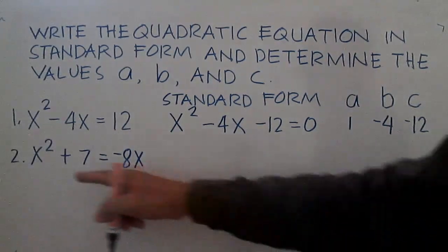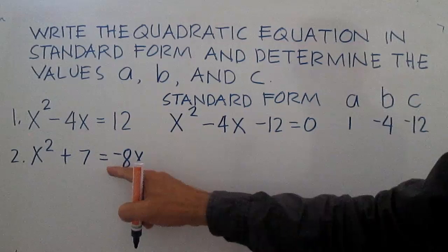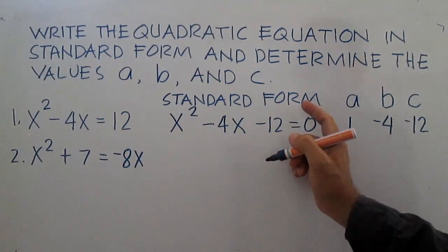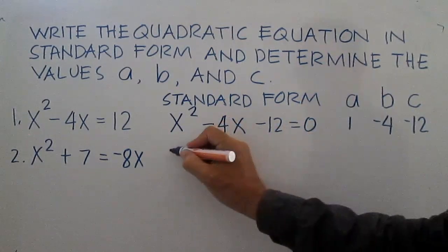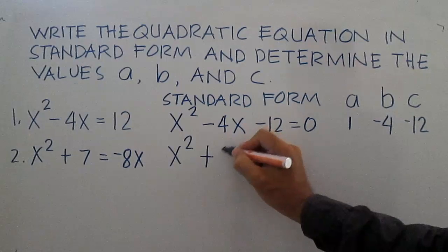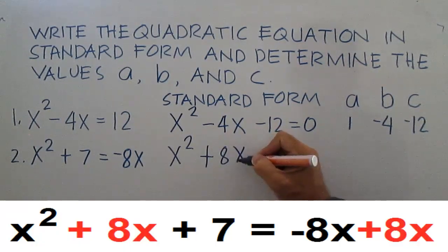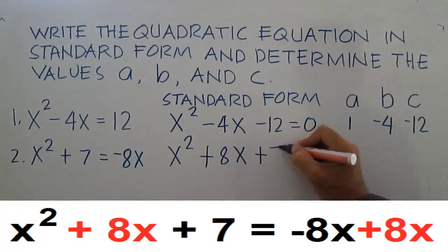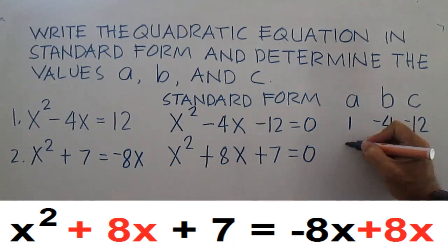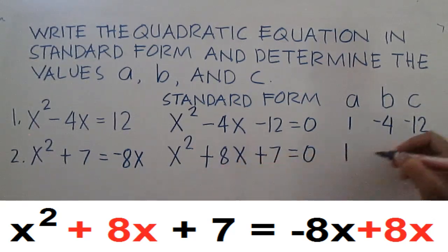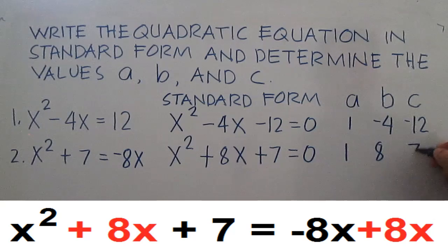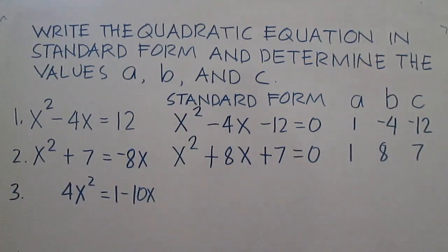Another example: x squared plus 7 equals negative 8x. In standard form, this is x squared plus 8x plus 7 equals 0. A is 1, b is 8, and c is 7.